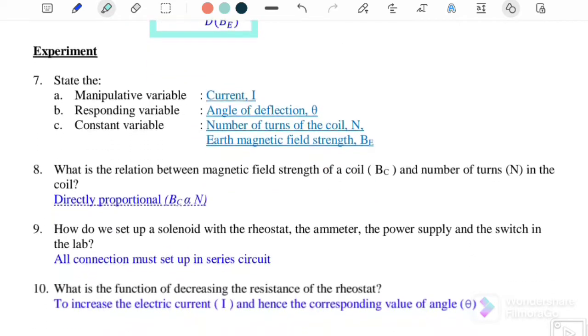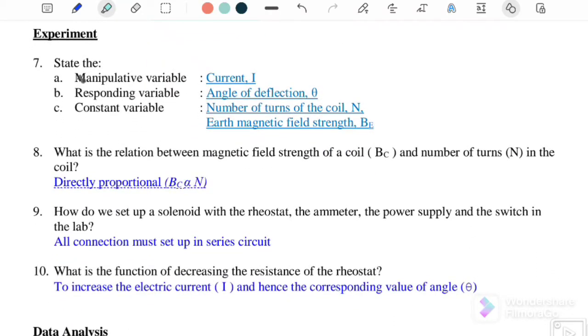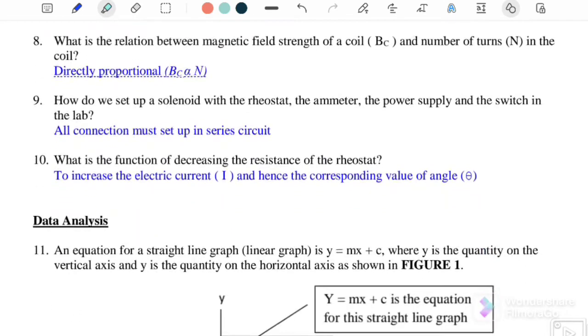For the experiment, the manipulative variable is the current, the responding variable is the angle of deflection, and the constant variables are the number of turns and the Earth's magnetic field strength.